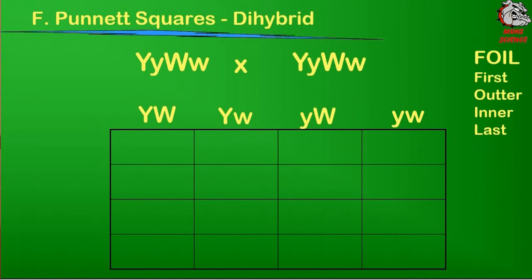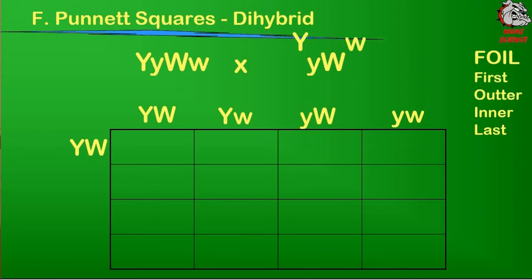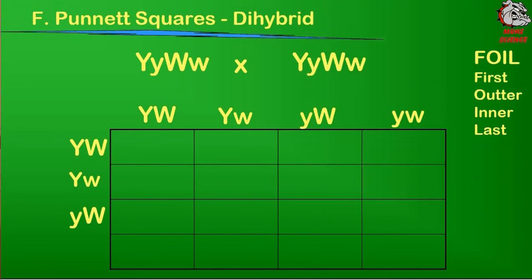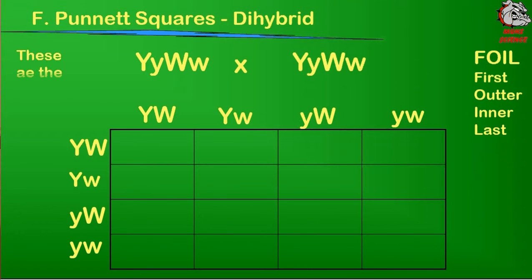Now because both parents are the exact same genotype — big Y, little y, big W, little w — they're going to be the same for the other parent, but I'm still going to animate those. So for the other parent, we do the first: big Y, big W. We got the outer: big Y, little w. We have the inner: little y, big W. And finally, lowercase y, lowercase w is our last gene.